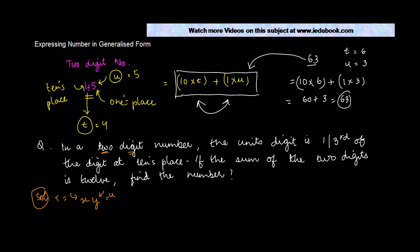The unit's digit is one-third of the digit at ten place. So we are given that y, which is the unit's digit, is one-third of the digit at tens place. Tens place we have x or x is equal to 3y.